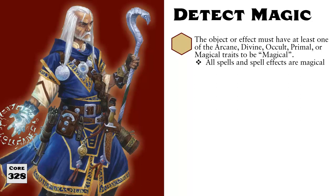For example, alchemical items and elixirs don't have any of those traits. Therefore, they're not magical.